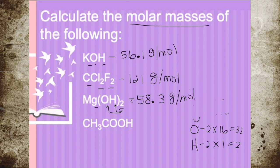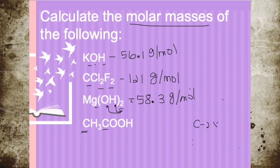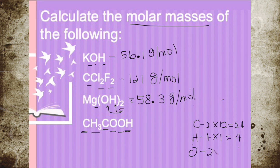The last example of molar mass: we have CH3COOH. Count the number of each element. You have two carbons, so 2 times 12 equals 24. Hydrogen is 3 plus 1, so a total of 4 times 1 equals 4. Oxygen is 1 plus 1, so 2 times 16 equals 32. So 24 plus 4 plus 32 gives us the molar mass for CH3COOH, which is 60 grams per mole.